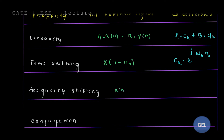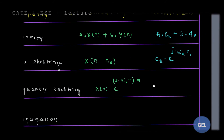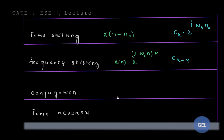For the frequency shifting property: here x(n) is multiplied by a frequency component e^(jω₀·k·n). Look here carefully — this multiplication shifts the Fourier series coefficient CK, so the coefficient becomes CK shifted by that frequency index.